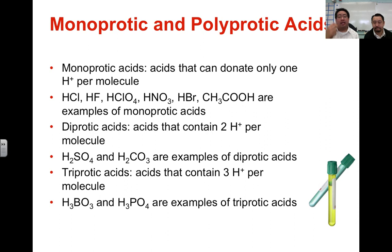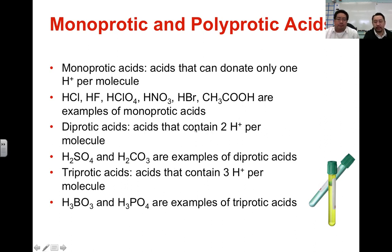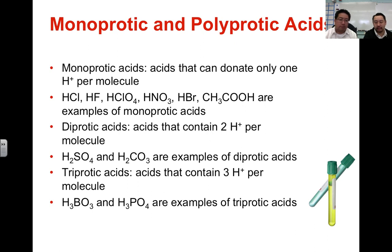We also have acids that are capable of donating multiple hydrogen ions. If an acid can only donate one, it's called a monoprotic acid — all the acids listed have only one hydrogen ion to donate. It's also possible for an acid to donate two, or even three, protons when it dissociates in water. An example would be H2SO4, which has a subscript of two, so it will give off two hydrogen ions. H2CO3 will also do the same thing.